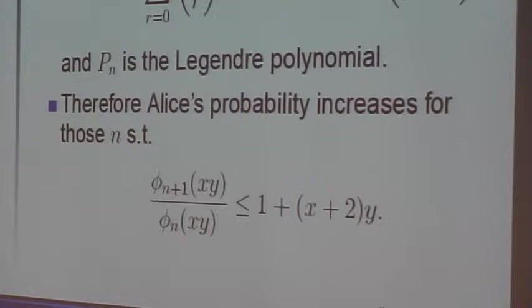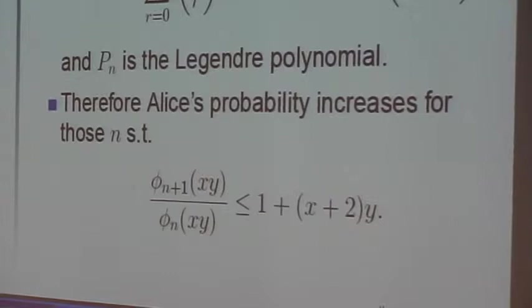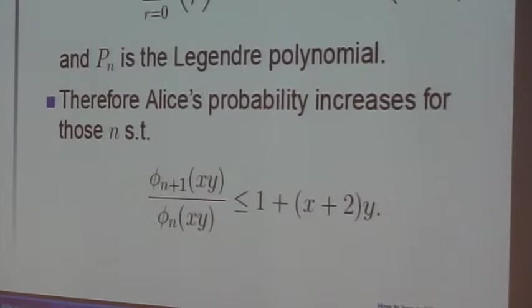And it increases for those n and it'll decrease if that inequality is reversed. So the problem is to prove, first of all, that there's only one such n—which is true, there's only one n for which this left side exceeds... sorry, passes through the right-hand side.